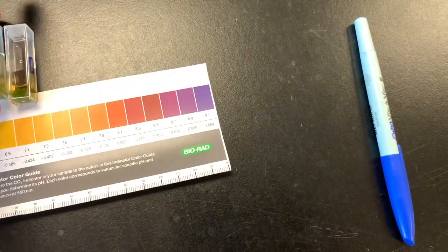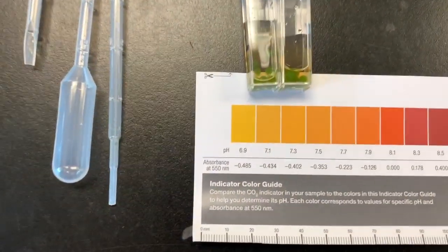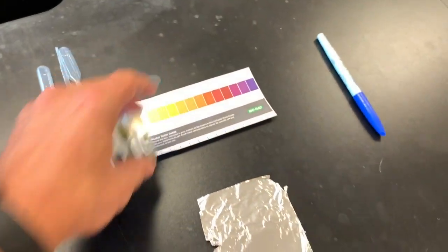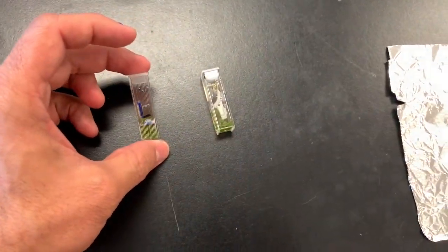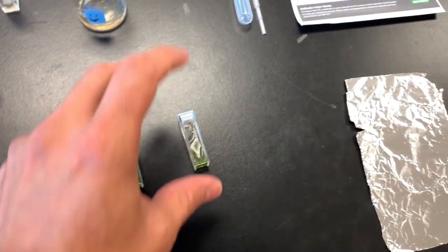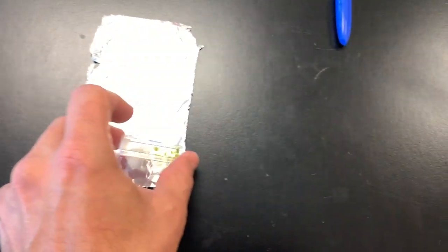It should be the same, same color there. And so then with the light one, you're not going to do anything with it, you're going to leave it as is. The dark one will get wrapped in aluminum foil.